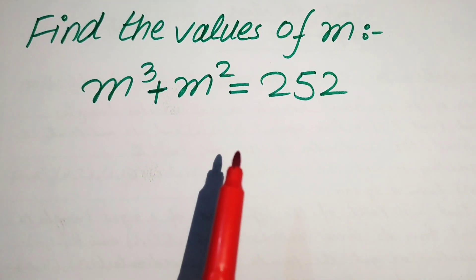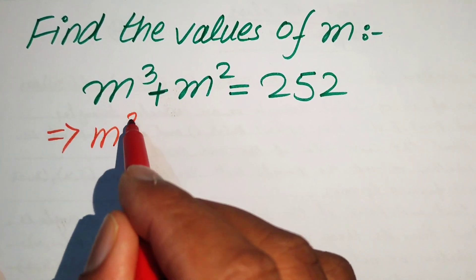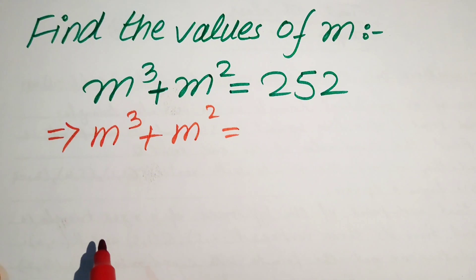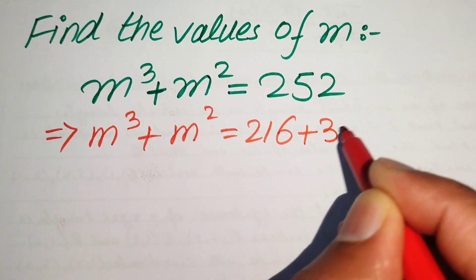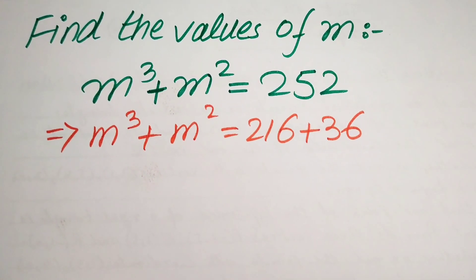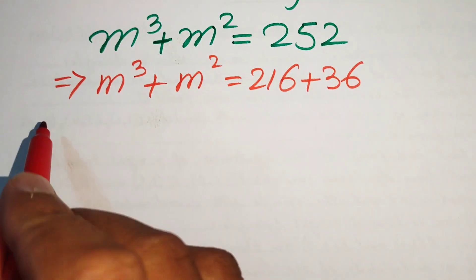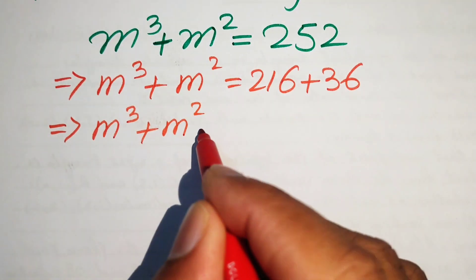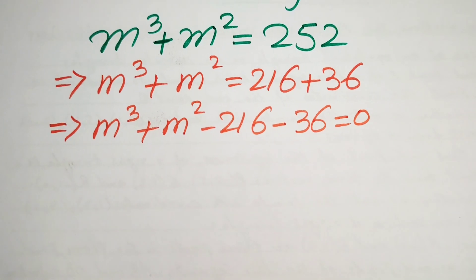The first step is to focus on the right-hand side: m³ + m² = 252. We break 252 and write it as 216 + 36, since 216 + 36 = 252. We then move both terms to the left-hand side, giving m³ + m² − 216 − 36 = 0.